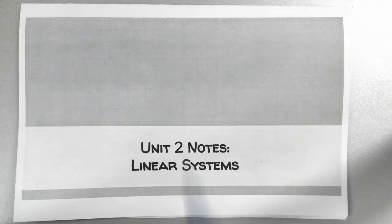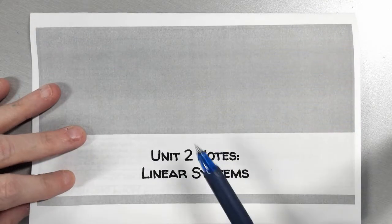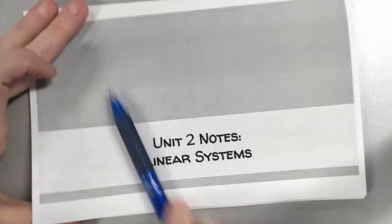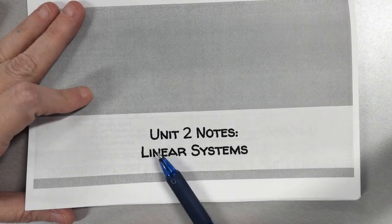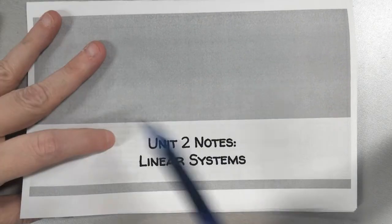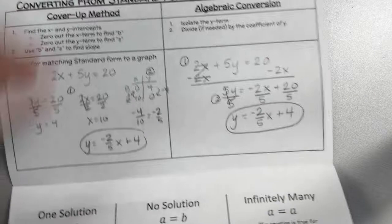We're going to start with linear inequalities because it's the shortest — it's just graphing — and then we'll move into graphing systems of equations. In Algebra 1, we only focus on linear systems and only deal with two equations. You'll deal with more equations and more variables when you get into Algebra 2. We have slope-intercept notes and one solution, no solution, infinitely many notes in the packet. So we're going to start with systems of inequalities.